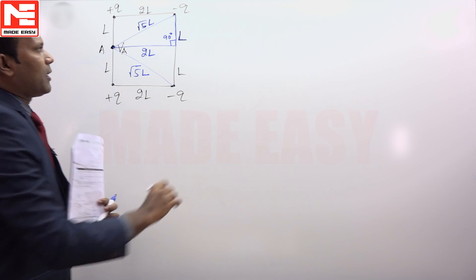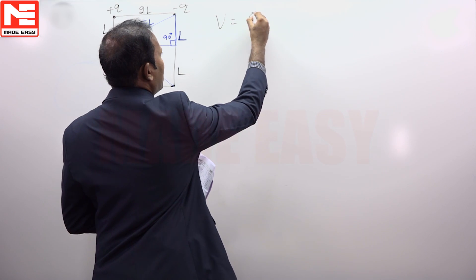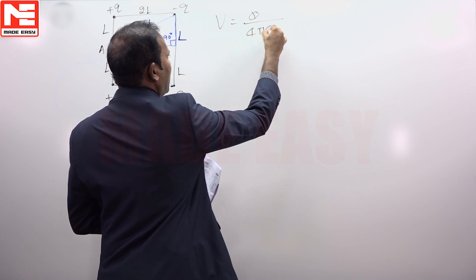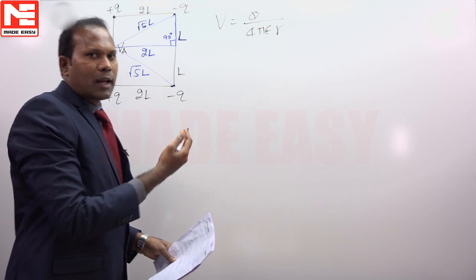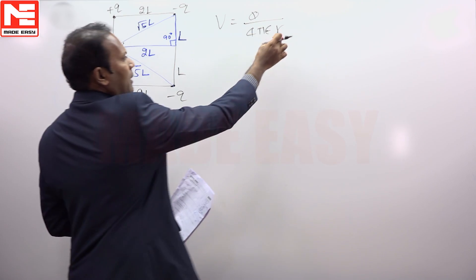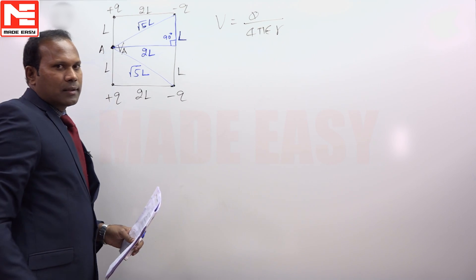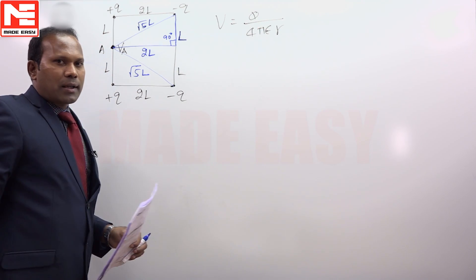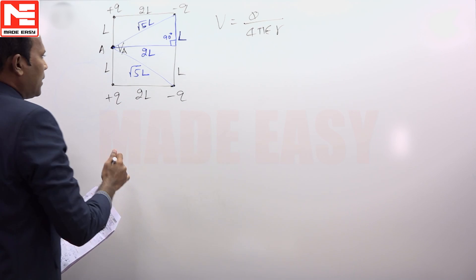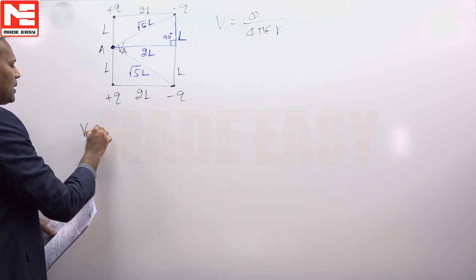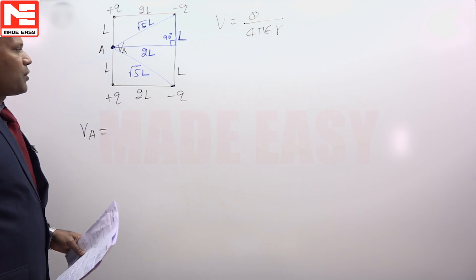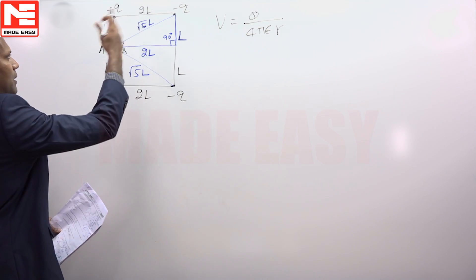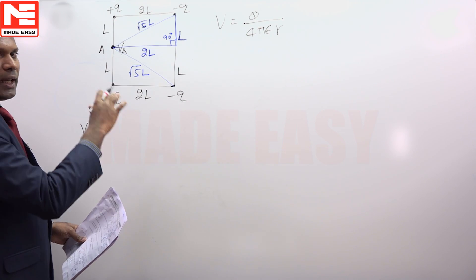You know that potential formula due to a point charge is Q by 4πε₀R. This is the general formula. Here R is the magnitude of the distance between charge location and potential location. So potential is linear. Total potential at this location due to 4 charges - find the potential individually and add.